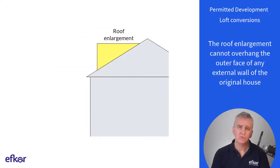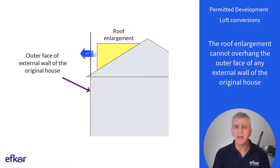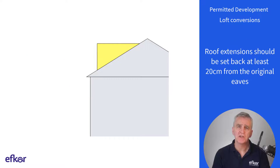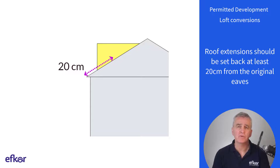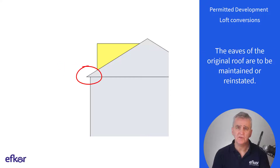The roof enlargement cannot overhang the outer face of any external wall of the original house. Roof extensions should be set back at least 20 centimeters from the original eaves, measured along the roof slope from the outside edge of the eaves — guttering not included. The eaves of the original roof are to be maintained or reinstated.